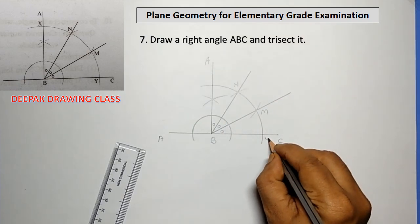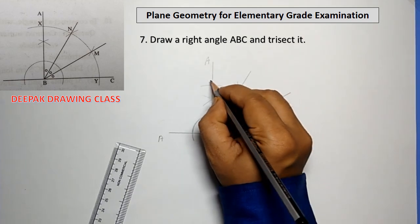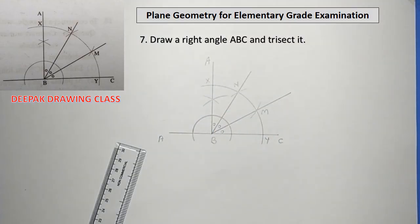Therefore, lines BM and BN divide the right angle ABC into three equal parts. The construction is done.